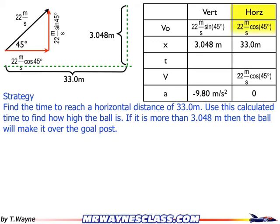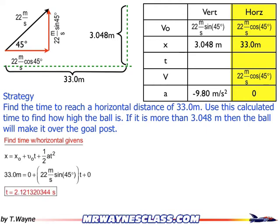So I'll look at the horizontal givens. I'm going to find the time with the horizontal givens using my range equation, which is x equals x naught plus v naught t plus 1 half at squared. And I've got 33 meters equals 22 meters per second sine 45 times time. So that gives me a time of 2.121 seconds.